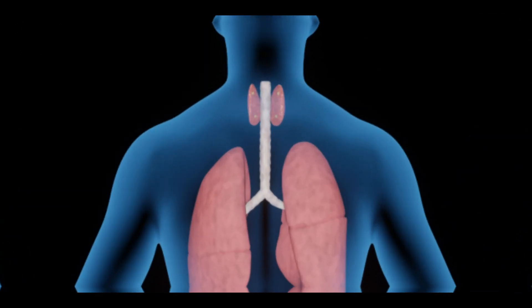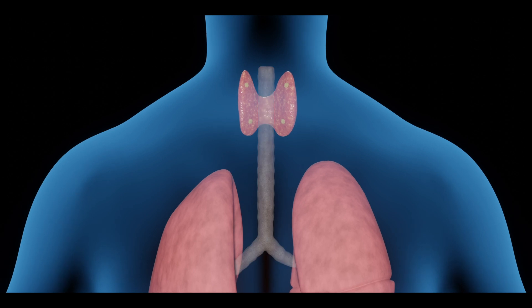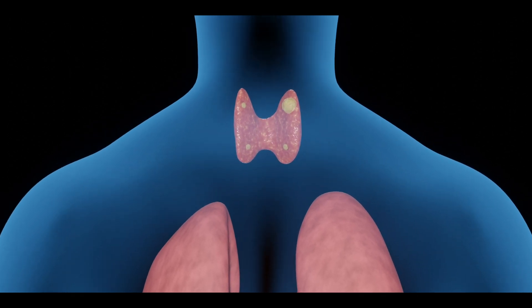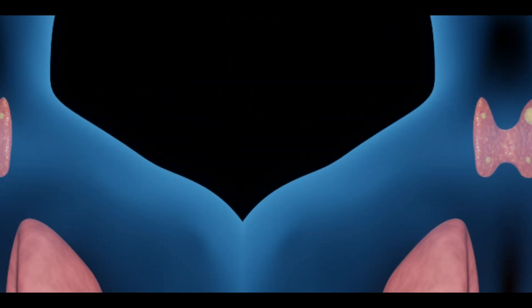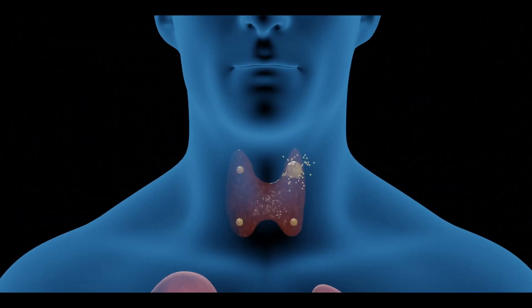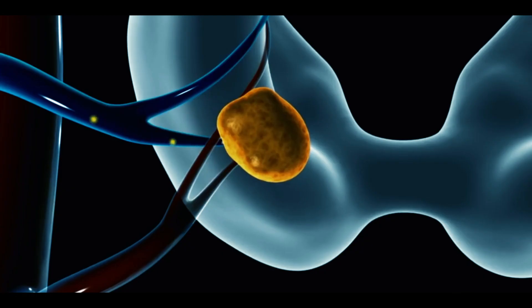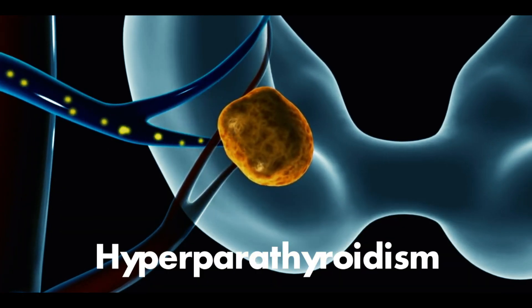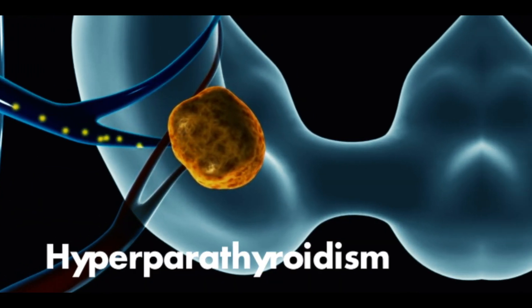Due to some reasons, if parathyroid glands become enlarged, they start overproduction of parathyroid hormone. This condition is called hyperparathyroidism and it can be treated through medication or surgery.